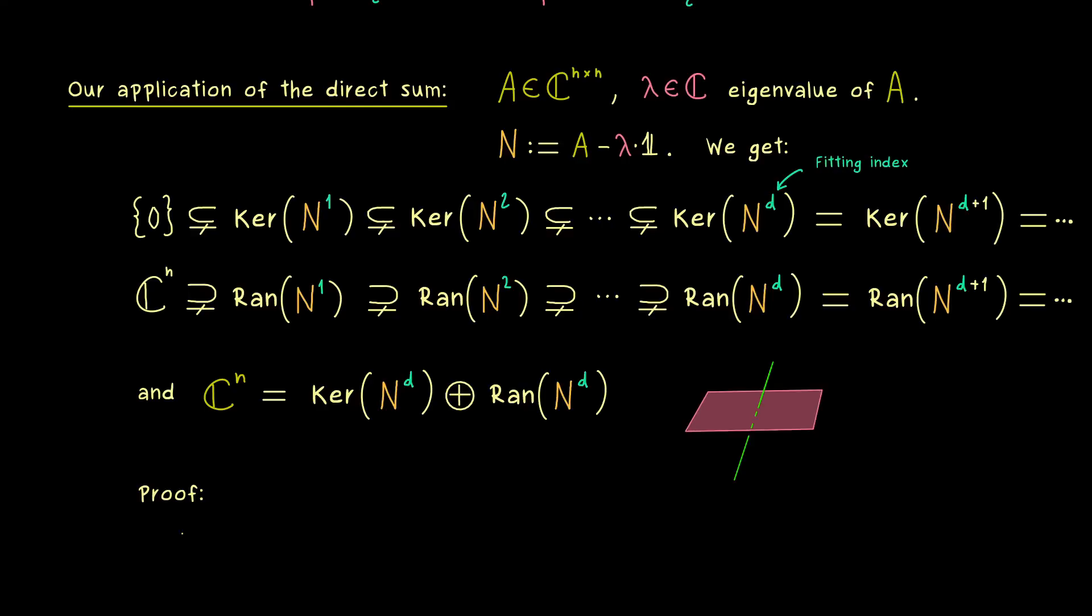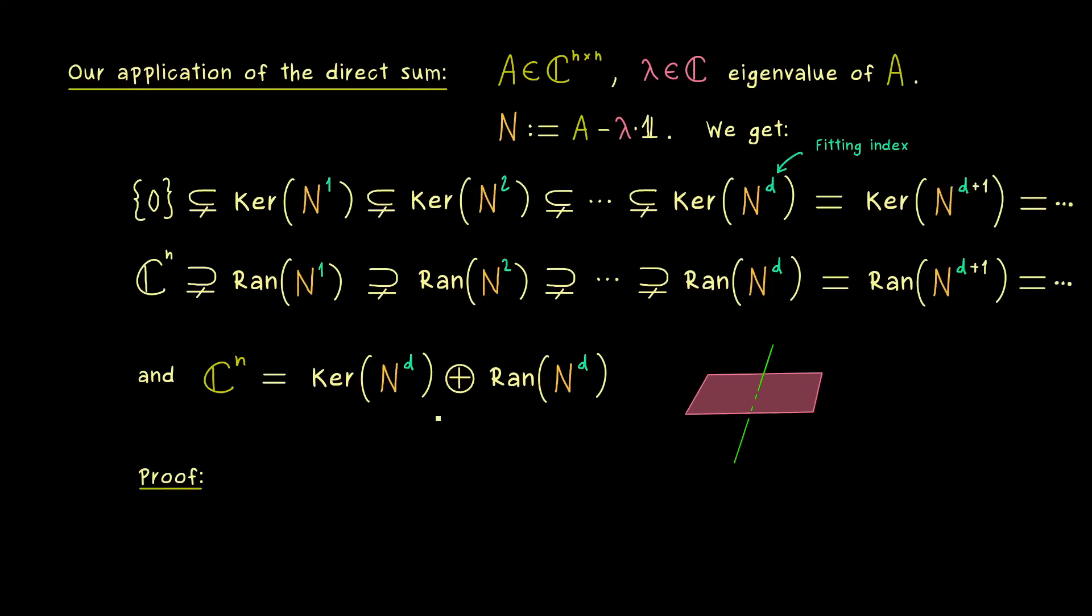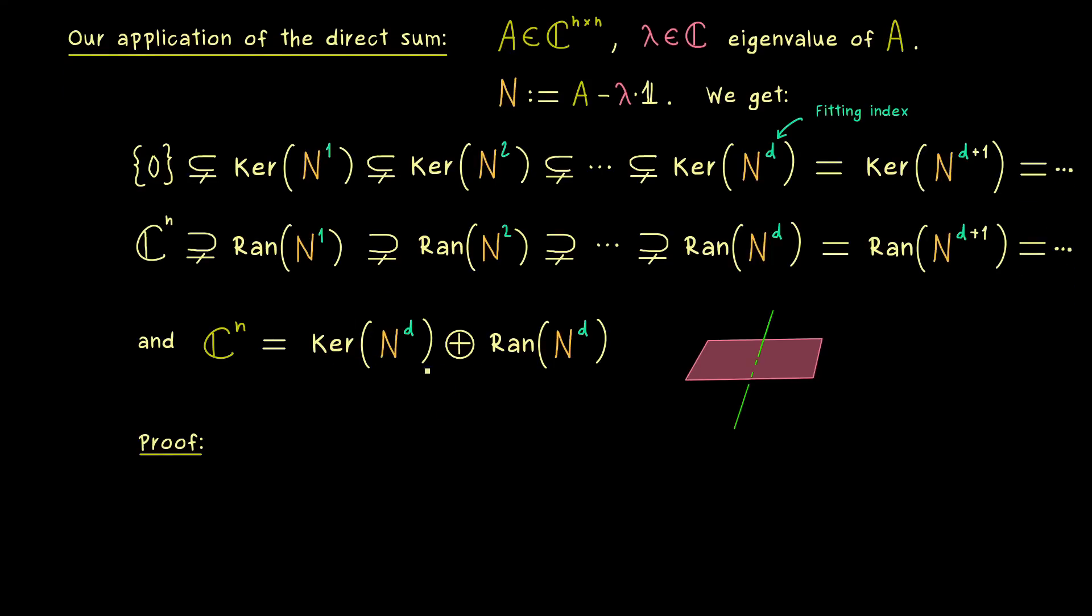And obviously, this is what we want to prove now. So you definitely remember that the direct sum is only allowed to write if the intersection of both subspaces is only equal to the zero vector.